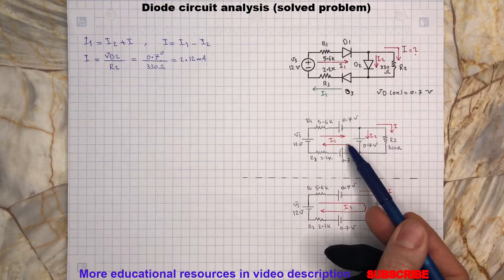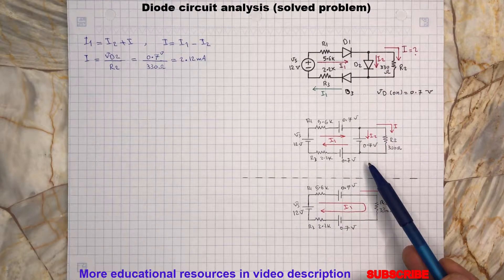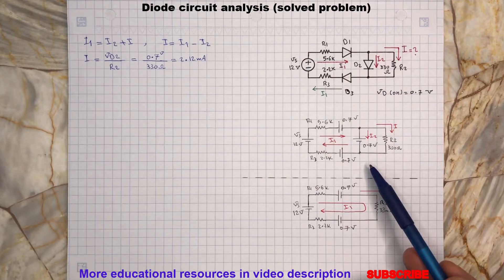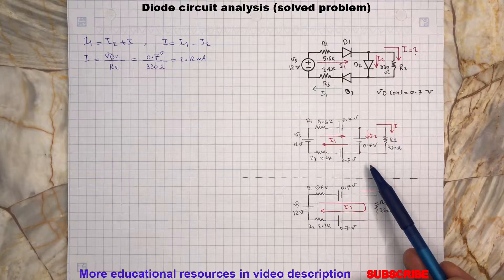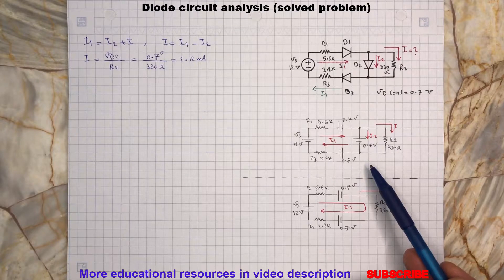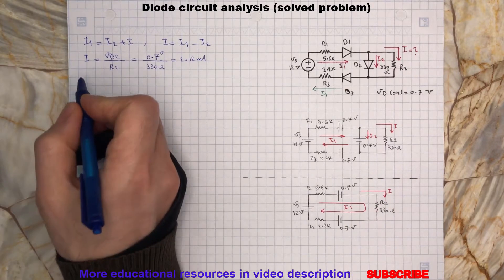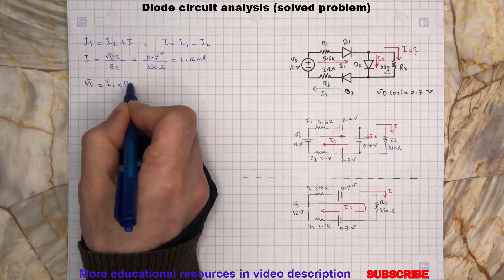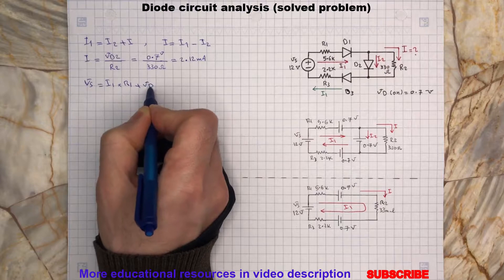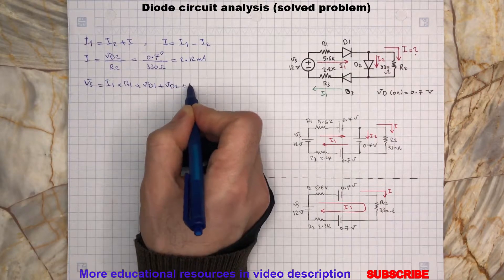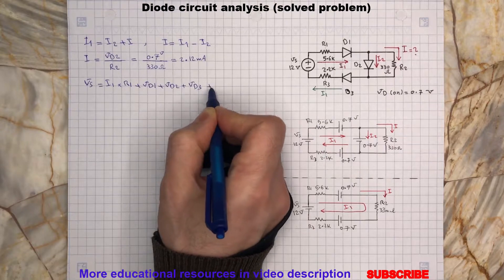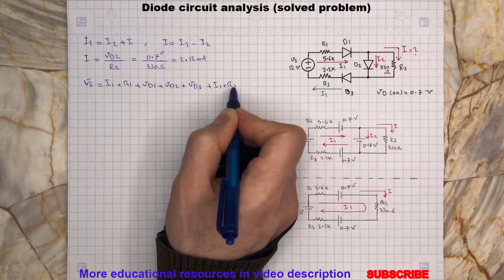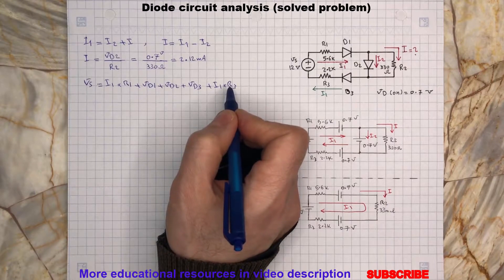Let's calculate I1. As you can see here, R1, D1, and D3, R3 are in series, so they should have a similar current flowing through them which is I1. So we can write, so I1 can be calculated by...